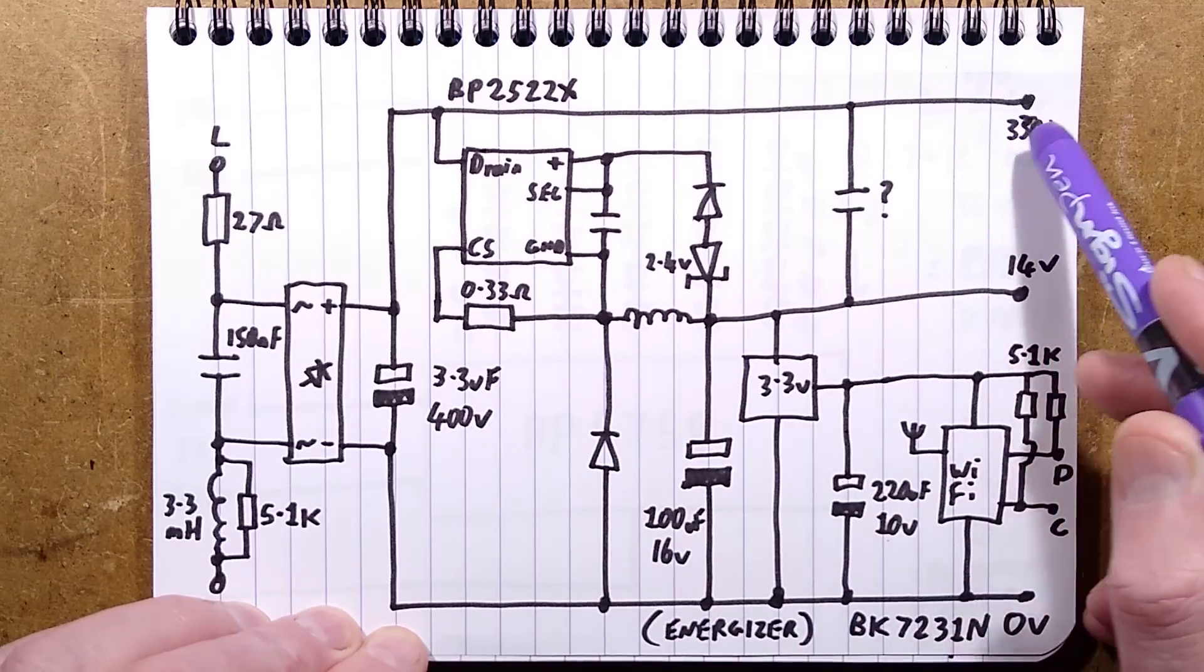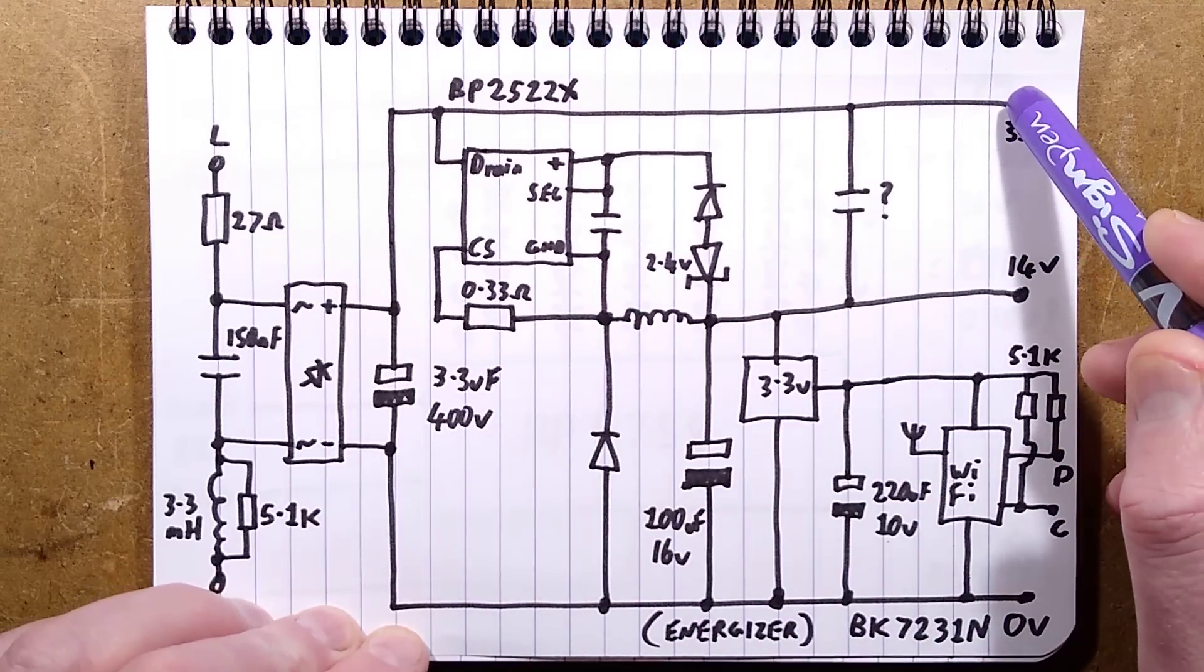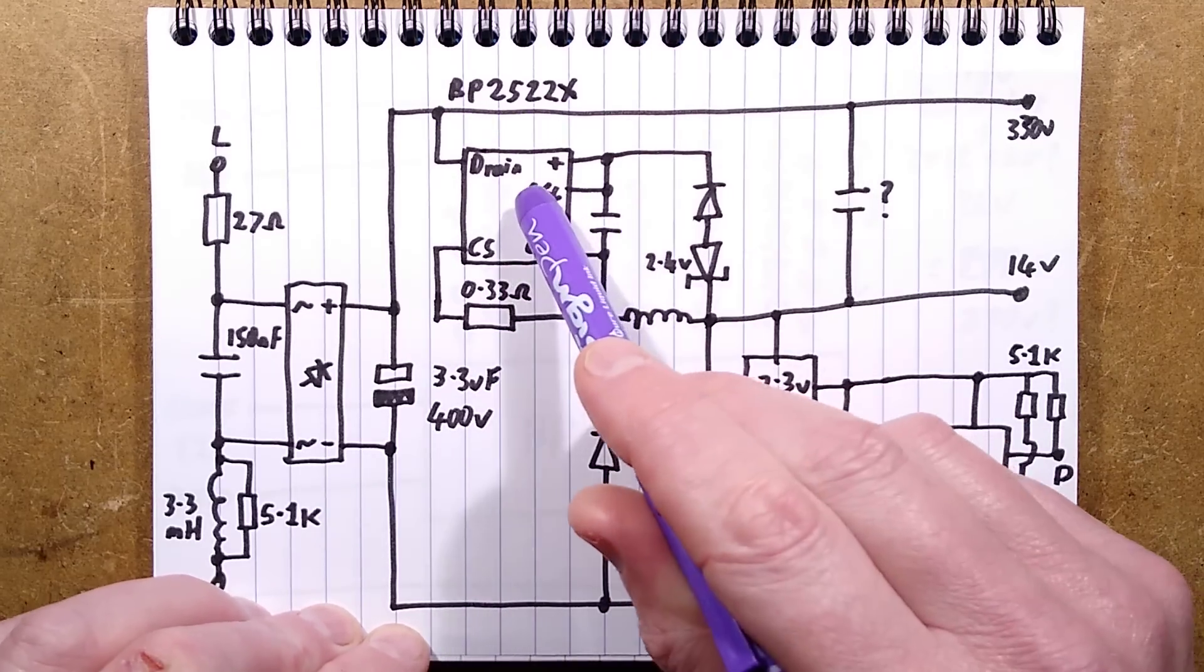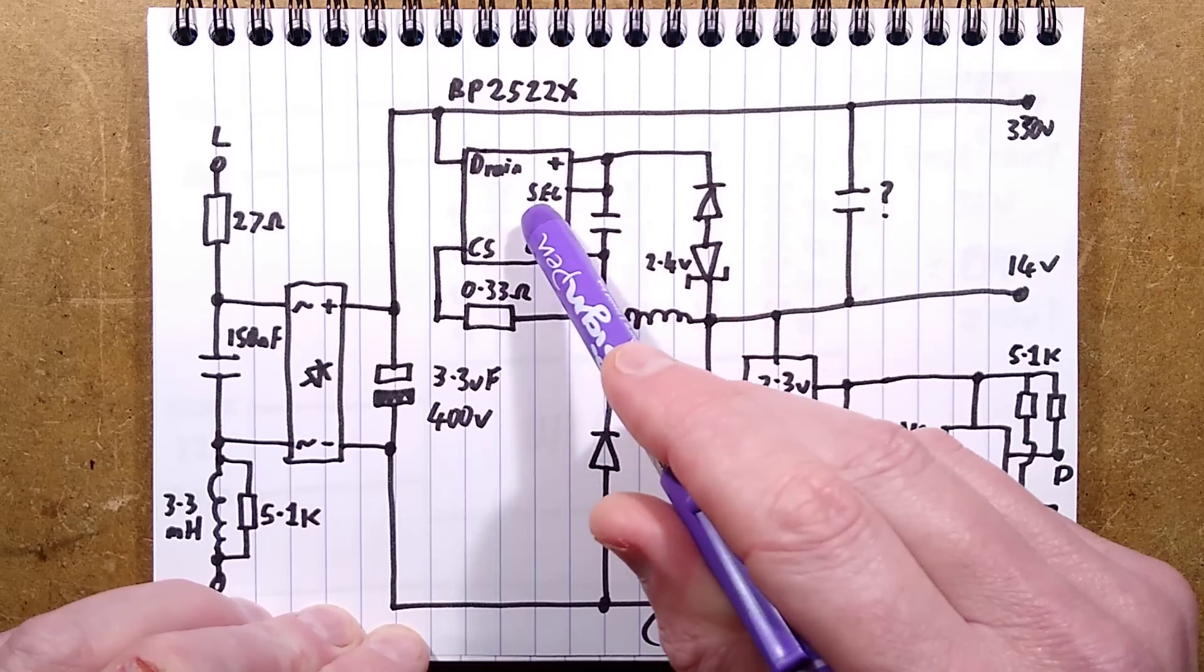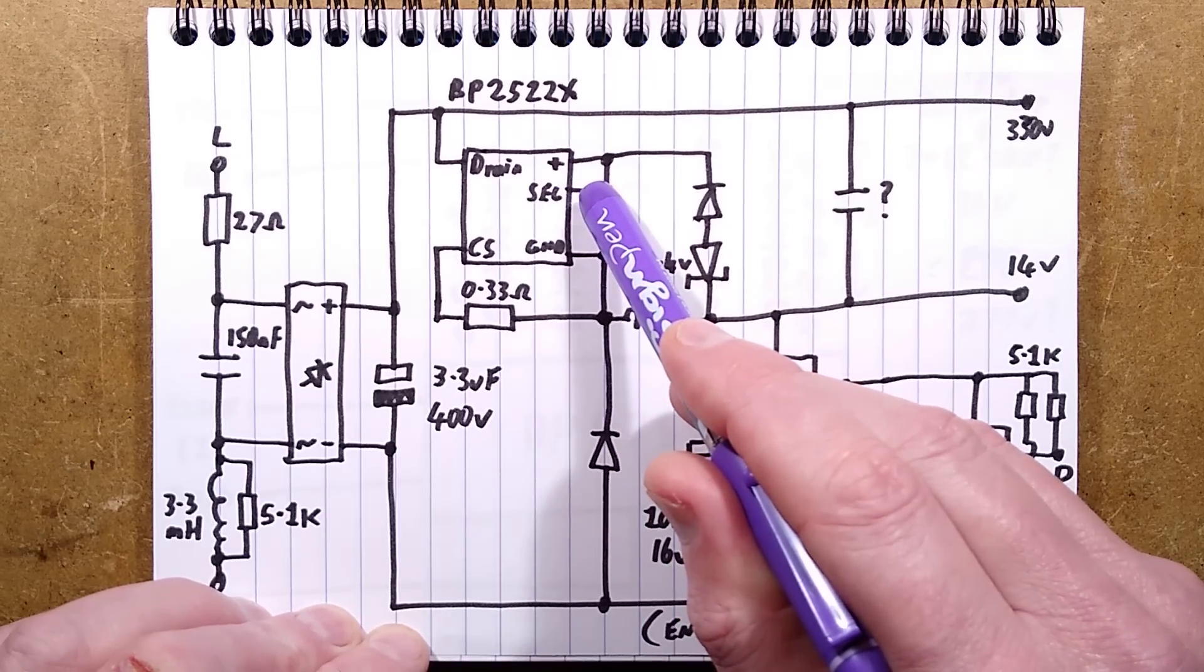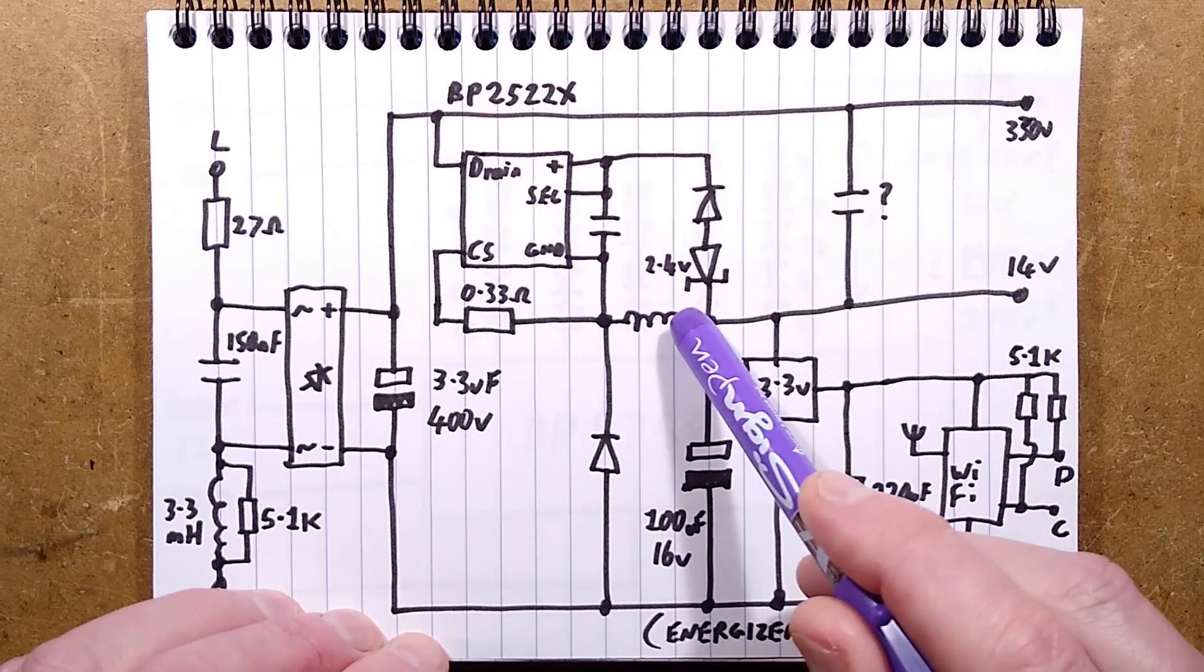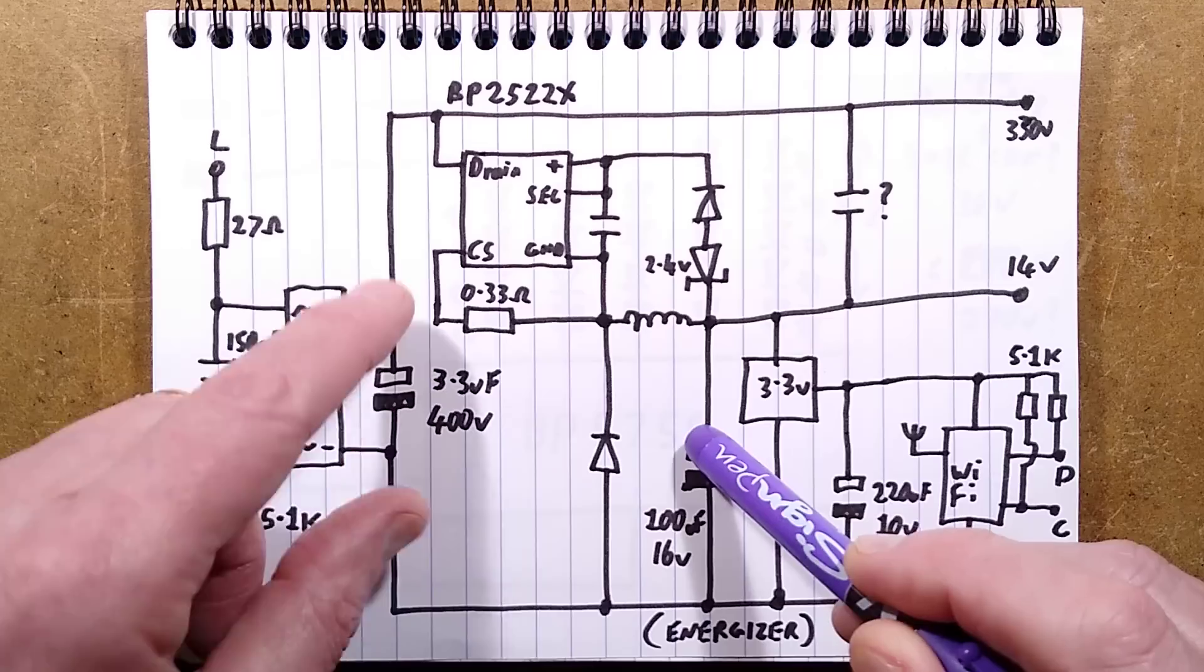The death beam capacitor has the output going with about 330 volts in the UK and Europe. It goes straight out to the LED circuit board. It also goes to this little Bright Power BP2522X chip, which is programmable. It's got a select pin that you can take to positive or ground to select either 12 or 24 volts. In this case it's 12 volts, nudged with a zener diode.